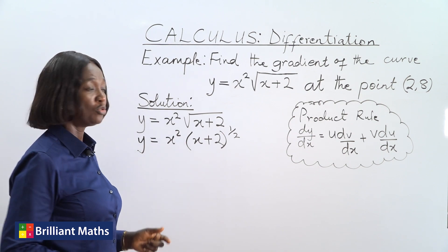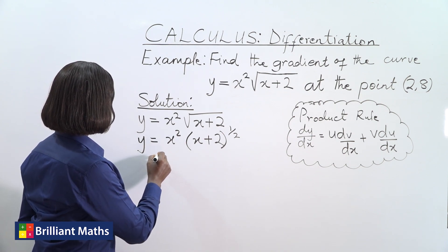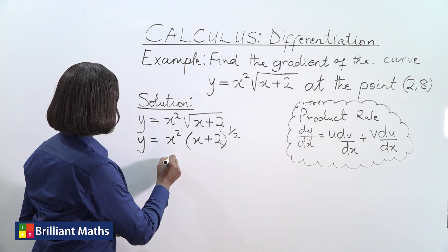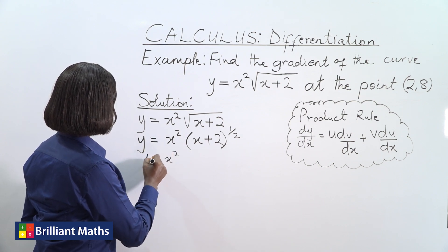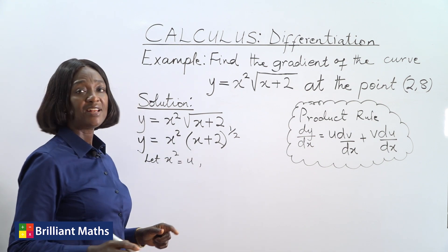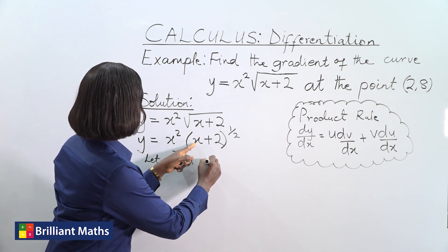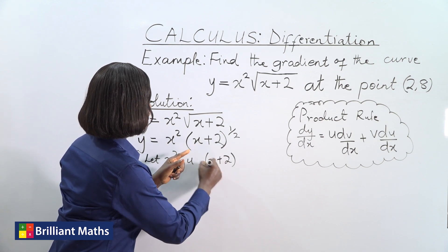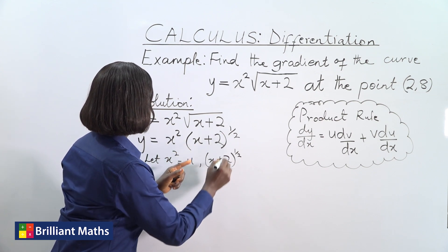So to use the product rule, let x squared equal to u, and x plus 2 to the power half be equal to v.